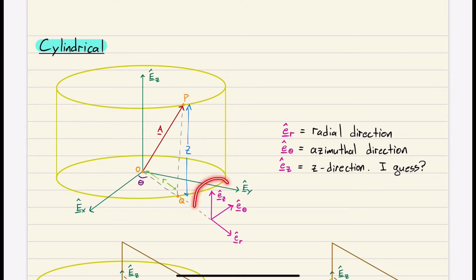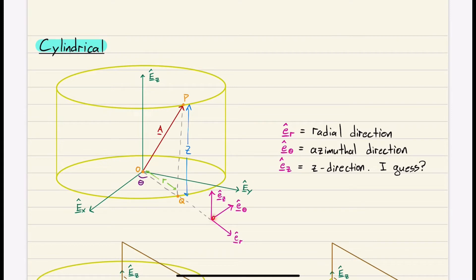The cylindrical basis has three unit vectors: ER, which is our radial direction; E-theta, which is called our azimuthal direction; and E-sub-Z, which is just the Z direction.